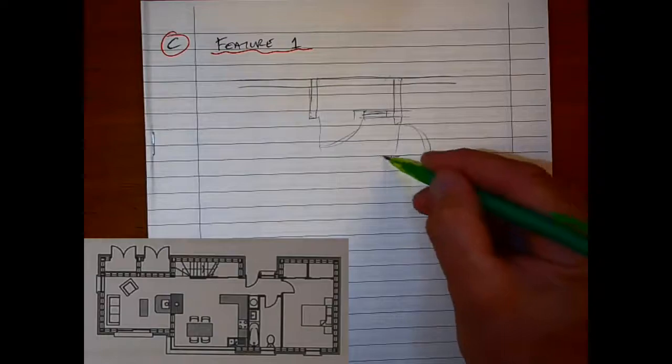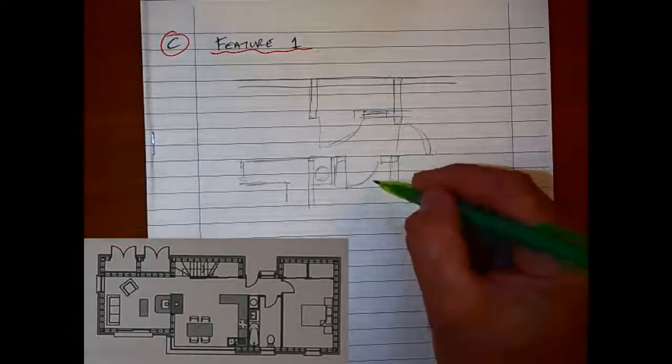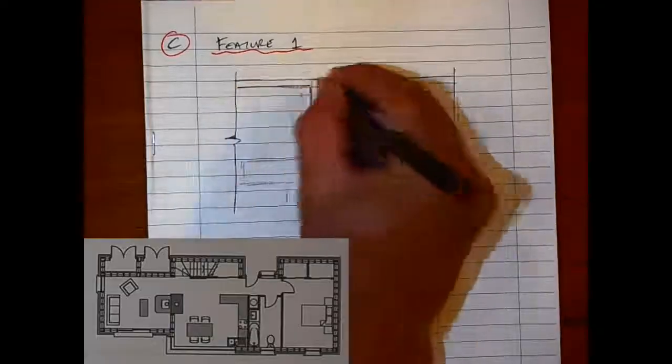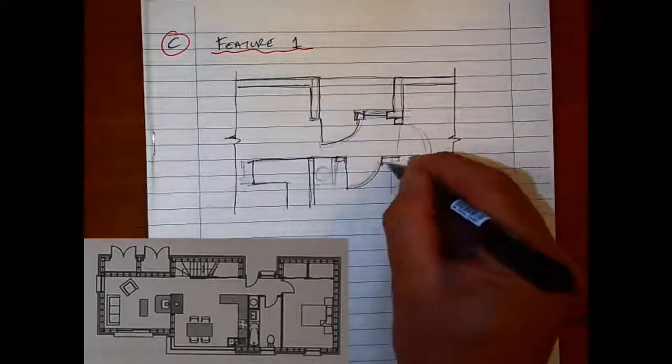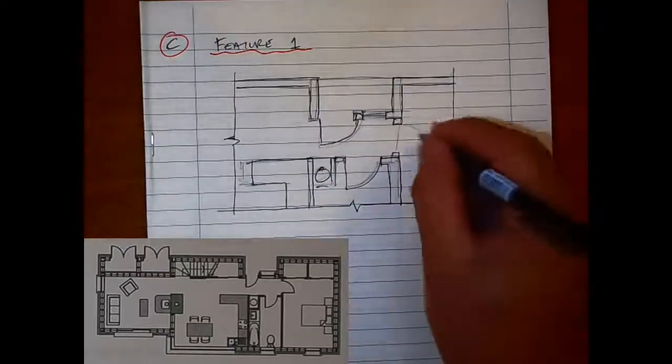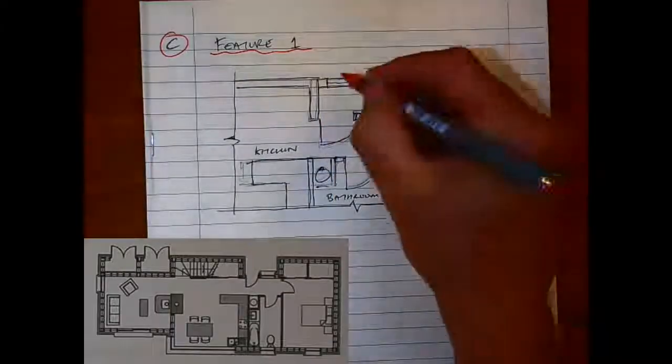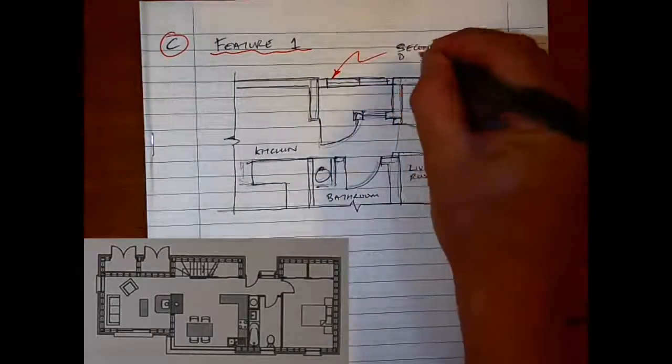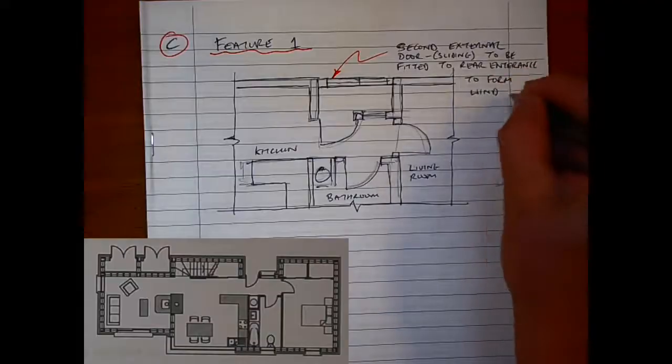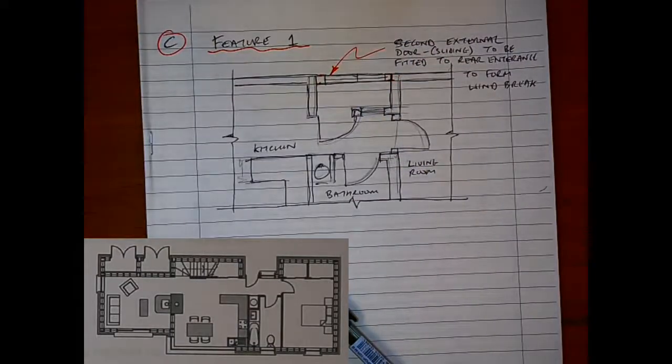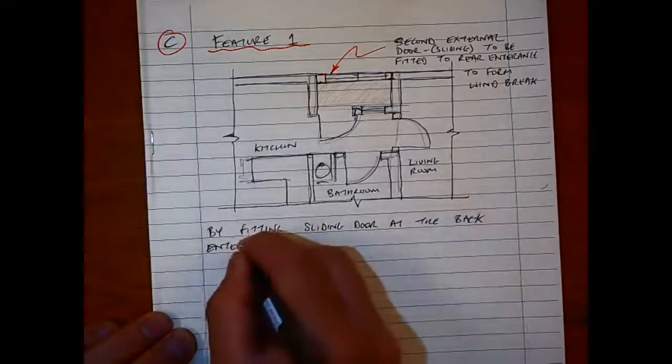In part C we're asked for two features to further reduce the operating costs of the house, because obviously there's a lot of design features already which are very good at reducing the overall running of the house and are environmentally friendly. The first feature I picked is at the back, the middle section where the door is beside the stairs. I didn't draw in the stairs in my sketch here, but I'm going to put in a porch with a second external door or a sliding door. It's working as a windbreak or like a porch, so that when the back door is opened there's less chance of heat escaping from that area I've shaded. By fitting the sliding door at the back entrance, heat loss by access will be greatly reduced.